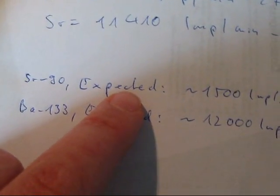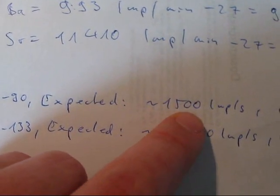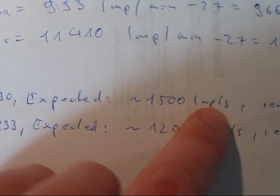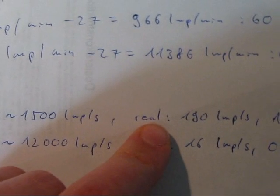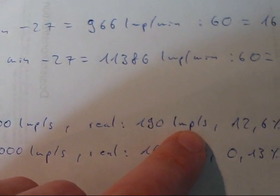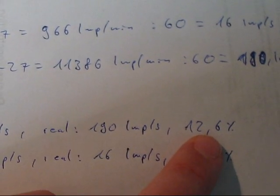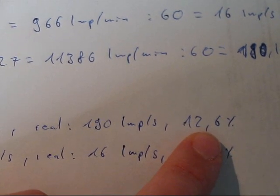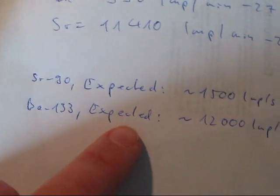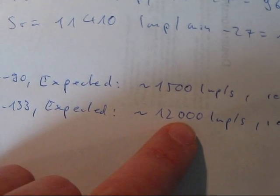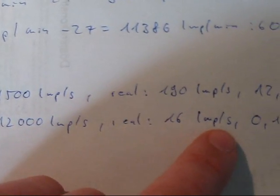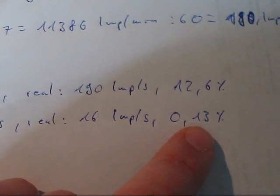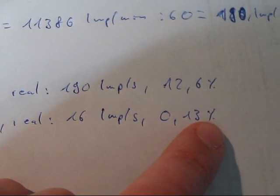So for Strontium-90, we actually expected around 1,500 impulses per second on that one side of the source. In reality, we got 190 impulses per second, so that equals to about an efficiency of 12.6%. And for gamma radiation, we expected 12,000 impulses per second. For real, we got 16 impulses per second, which equals 0.13%.